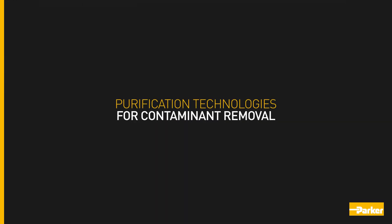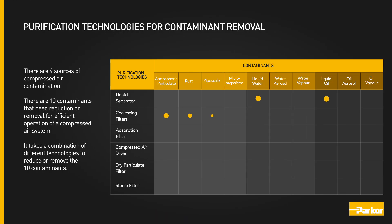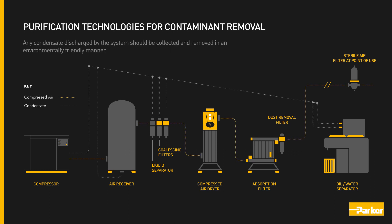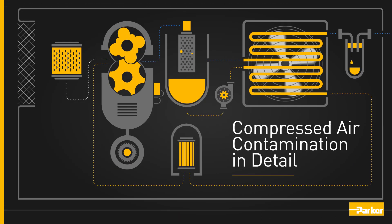Purification technologies for contaminant removal. There are four sources of compressed air contamination and 10 contaminants that need reduction or removal for efficient operation of a compressed air system. It takes a combination of different technologies to reduce or remove the 10 contaminants. Here's what a typical compressed air system layout might look like, where a combination of various removal technologies are used to treat the compressed air for all 10 contaminants. Any condensate discharged by the system should be collected and removed in an environmentally friendly manner.